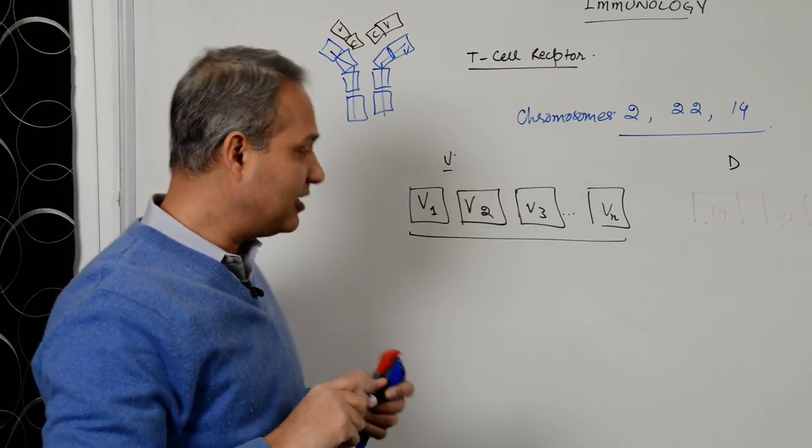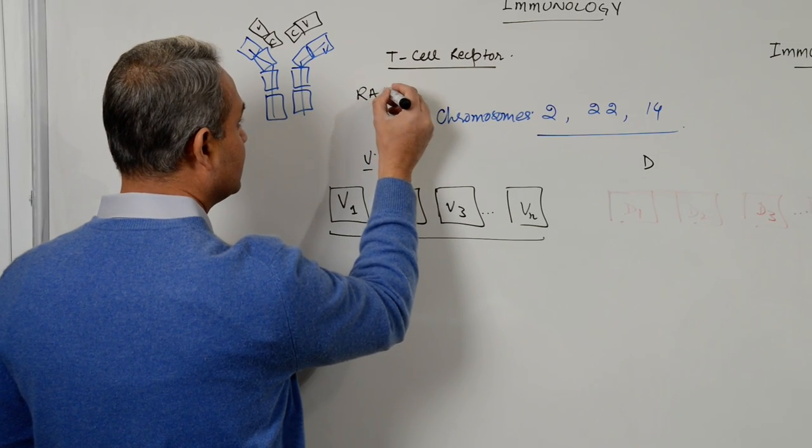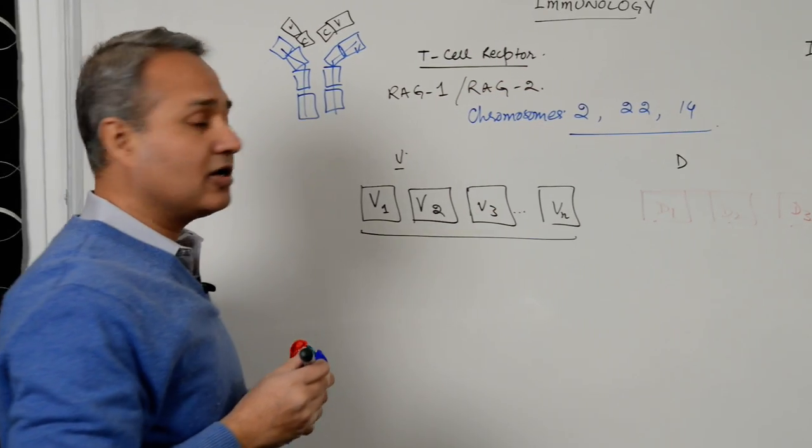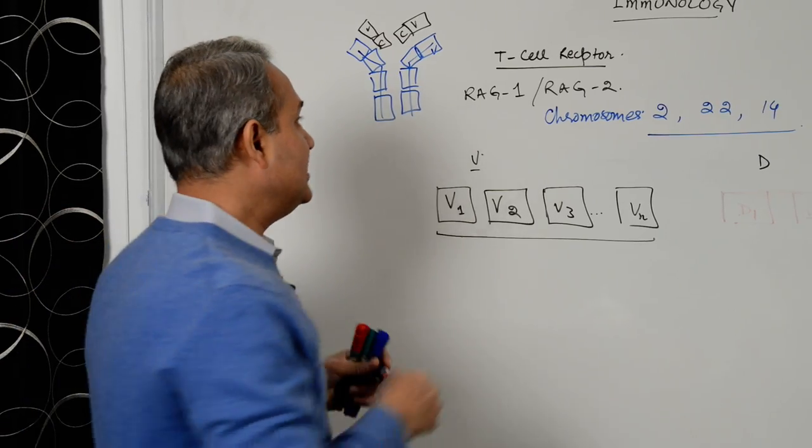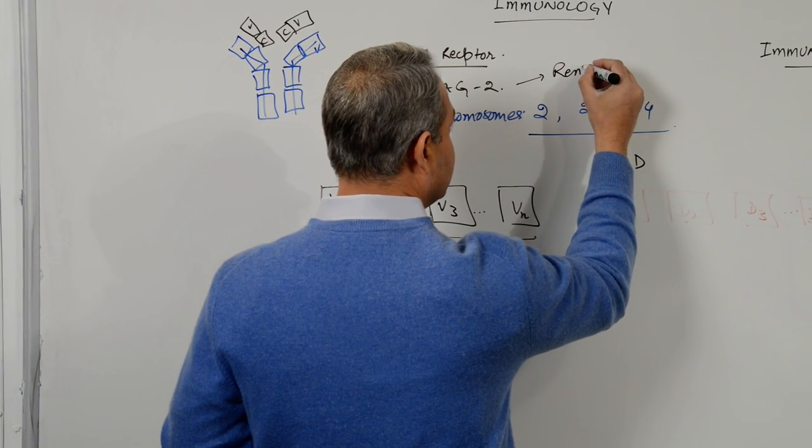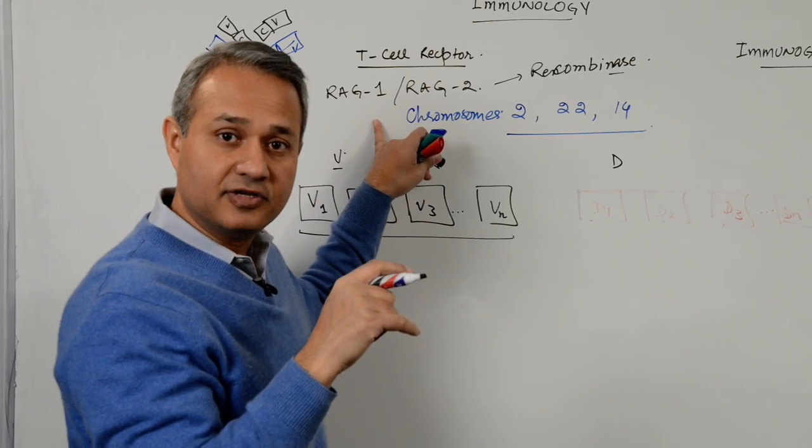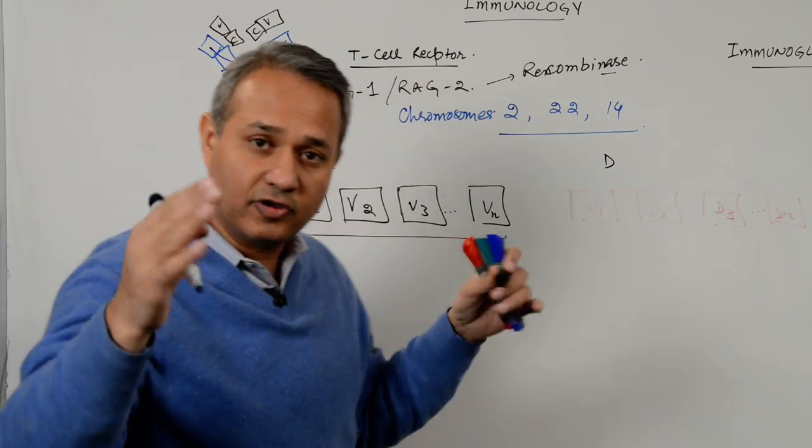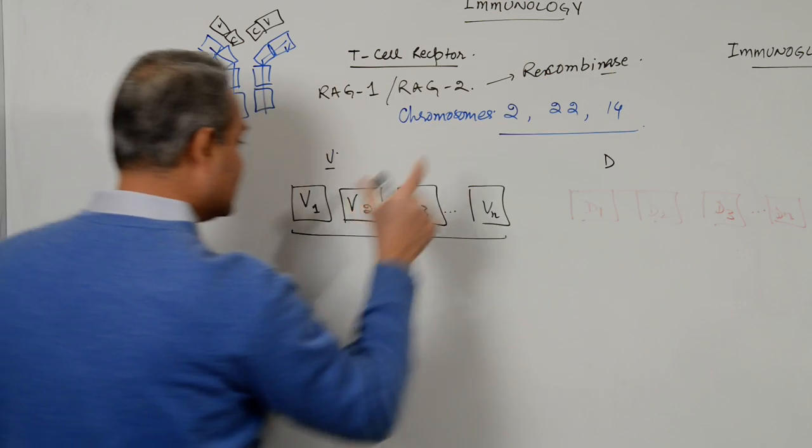The very first thing is there are two enzymes called RAG1 and RAG2, recombinase activation gene one and recombinase activation gene two. These two genes, when activated, produce the enzyme recombinase. For your purpose, I am recombinase. I'm the enzyme which is going to act here. I'm the enzyme, recombinase is active.